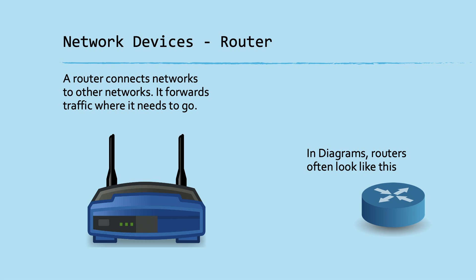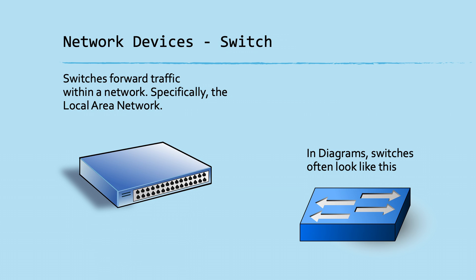Inside an enterprise you might have different buildings — A, B, and C — and if you want to talk to a computer in building C you'd use a router to connect the different building networks to each other. Building A might have its own router, building C might have its own, and building B's router would have to talk to building A's router to get across.